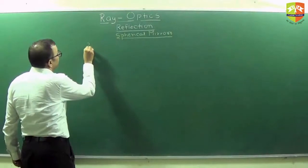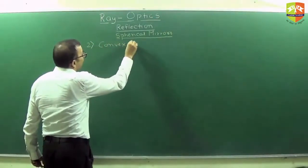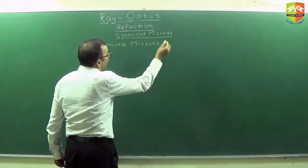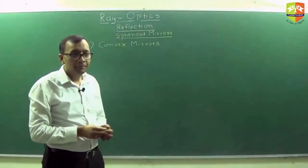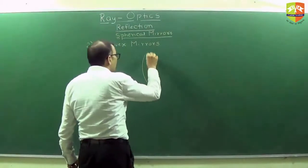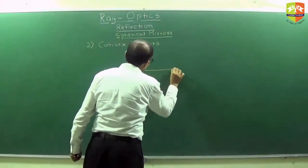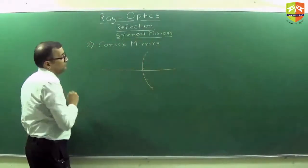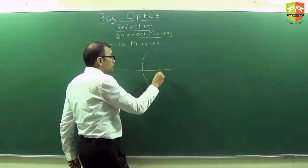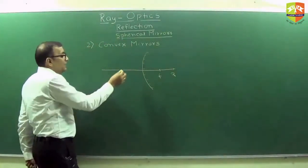Next we will take up convex mirror. Convex mirrors look like this, and this is the principal axis. Focus is here, this is R, and the object will be on this side.